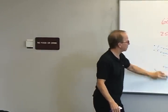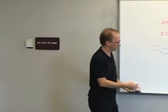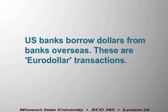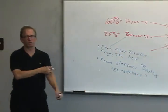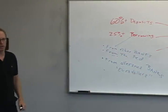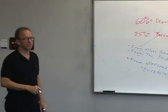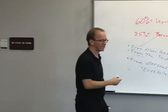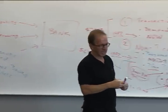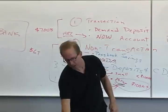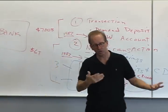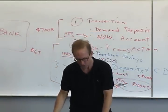The third place banks borrow - and we'll pick up here next time - is from overseas banks. The term we apply to those dollars held overseas is Eurodollars, and we use that term even if they're not in Europe. Next time we'll finish up talking about sources of funds for banks and turn our attention to the uses of funds.